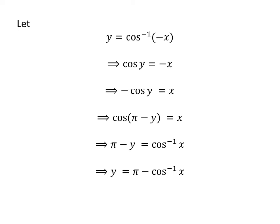Taking pi to the right side, we get minus y equals arccos of x minus pi. Then multiplying the whole expression by minus gives us y equals pi minus arccos of x.